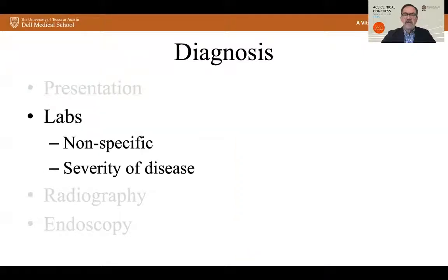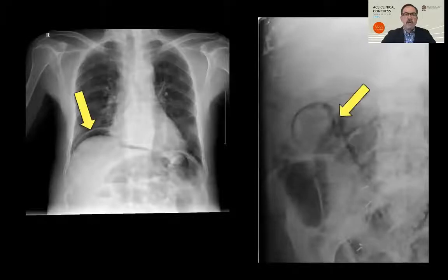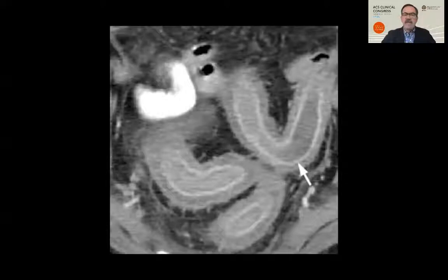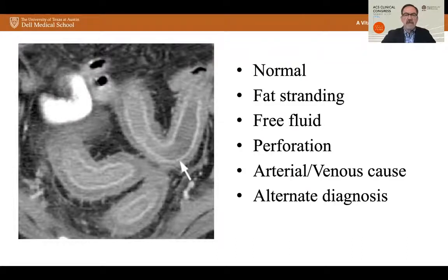Labs are nonspecific, but as you'll see in a few minutes, they may help you determine the severity of disease. Radiography may be useful. Plain films are likely to be normal, but may show free intraperitoneal air in the case of perforation or pneumatosis intestinalis in more advanced cases. CT scan is probably the most common imaging test and most commonly shows colonic thickening of the left colon, but may be normal, show some fat stranding, free fluid, or perforation in advanced cases, and may also show an underlying arterial or venous cause, or an alternative diagnosis like diverticulitis.